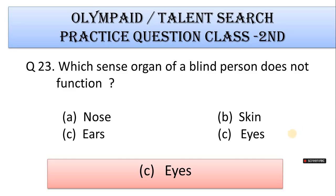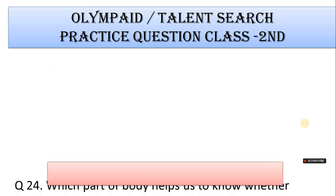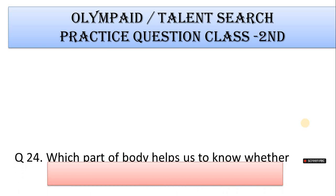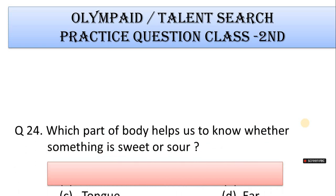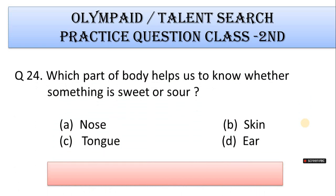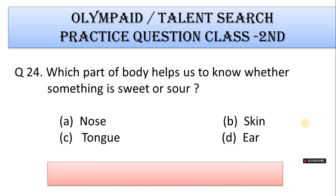Number 24: Which part of the body helps us to know whether something is sweet or sour? A. Nose, B. Skin, C. Tongue, D. Ear. Correct answer is Option C. Tongue.